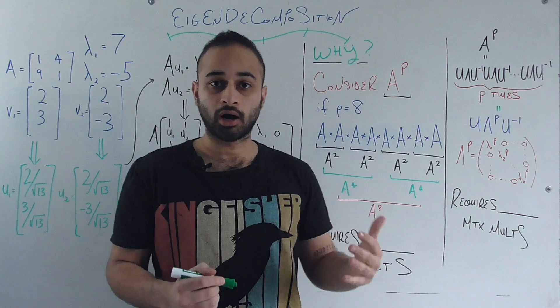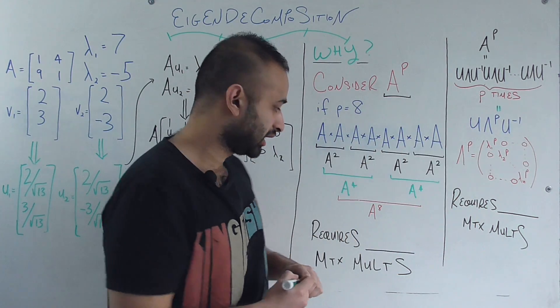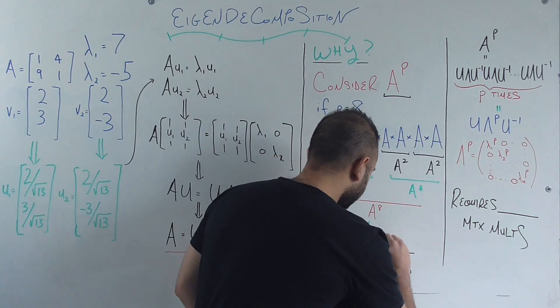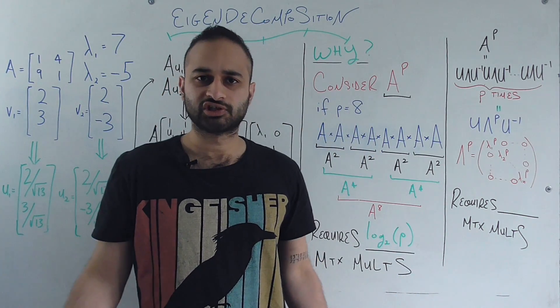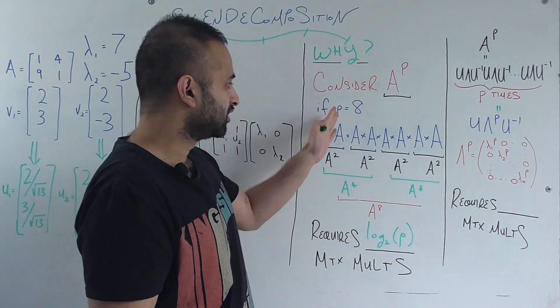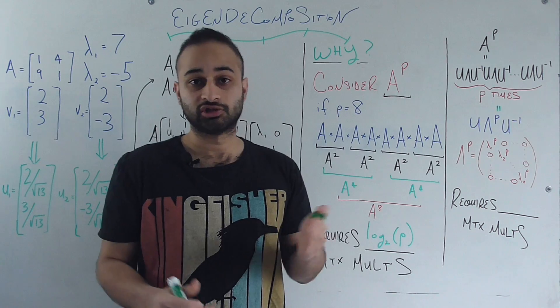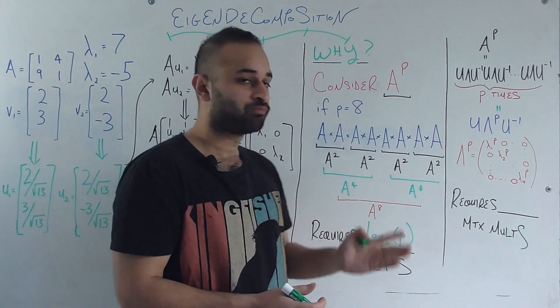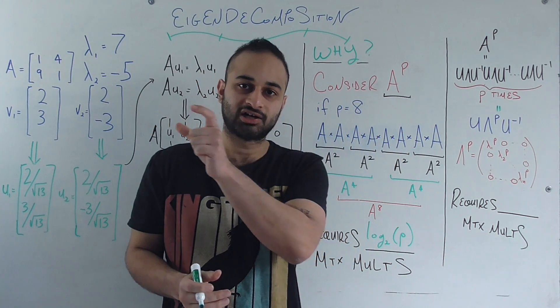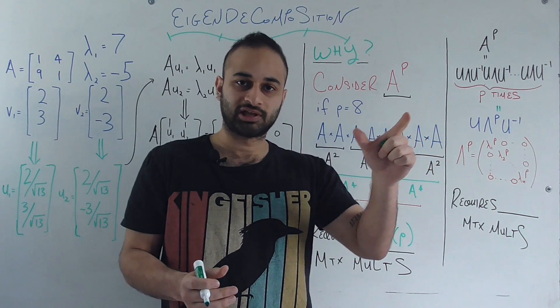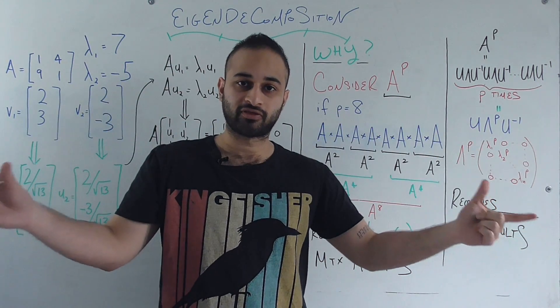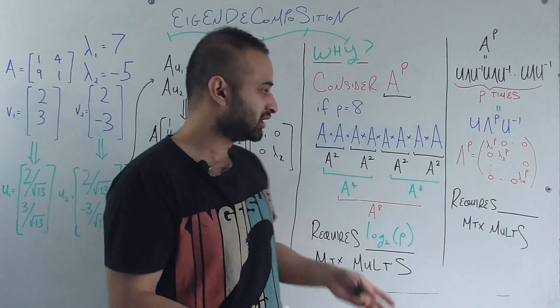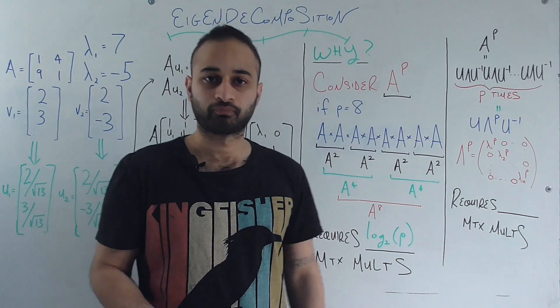And in general, we're going to have to do log two of P. So I'm going to write that here. Log two of P. Just a quick note why this is true. So P here was eight and log two of eight is three, which makes sense why we have to do three multiplications. But in general, when you group things into pairs like this, the number of multiplications you're doing total is log two of whatever number of things there were to begin with. Because this is logarithmically going down.